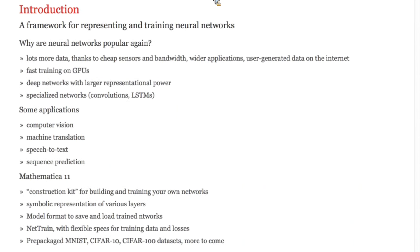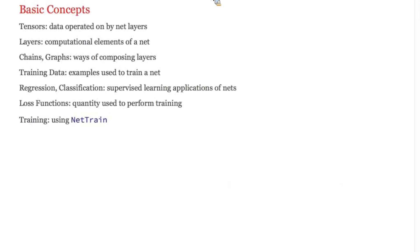The new neural network framework in Mathematica 11 provides a construction kit for training your own networks. The things I'm going to cover are how inputs to a net are encoded as tensors, what layers operate on those tensors, how to compose layers, what training data looks like, how networks learn, very roughly, the kinds of supervised learning that you can do, loss functions, and a worked example of training in practice.